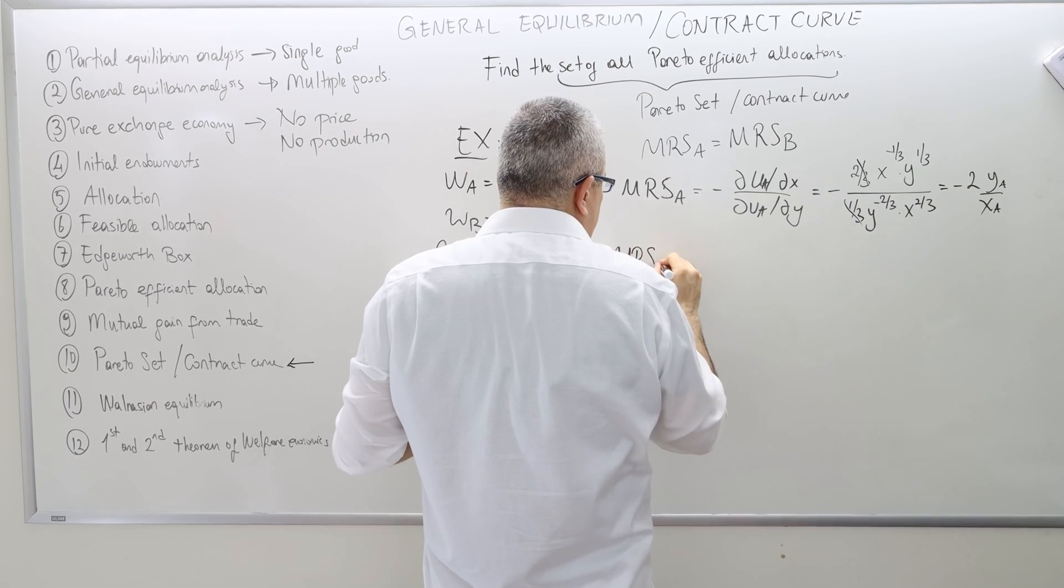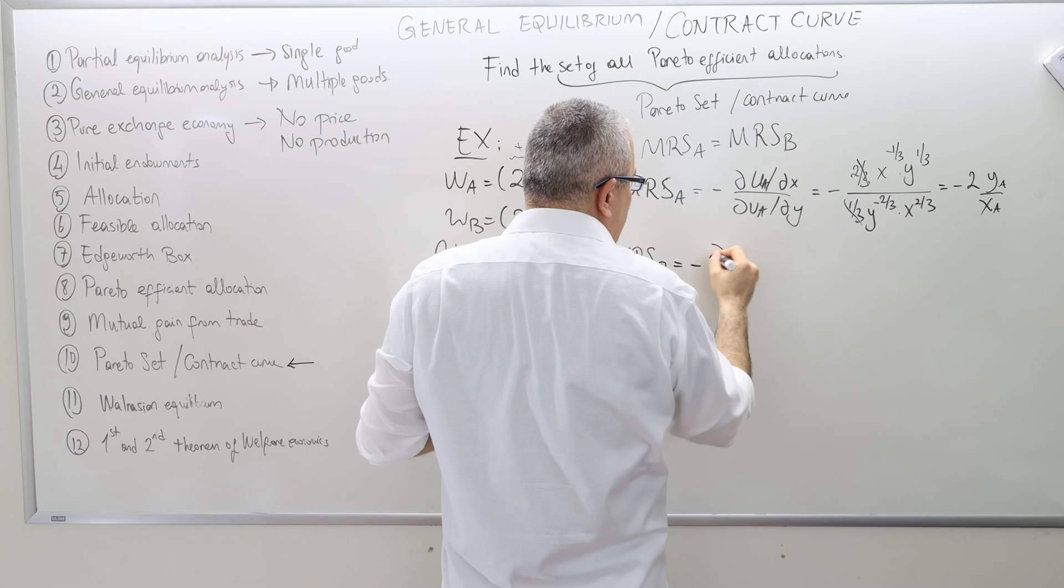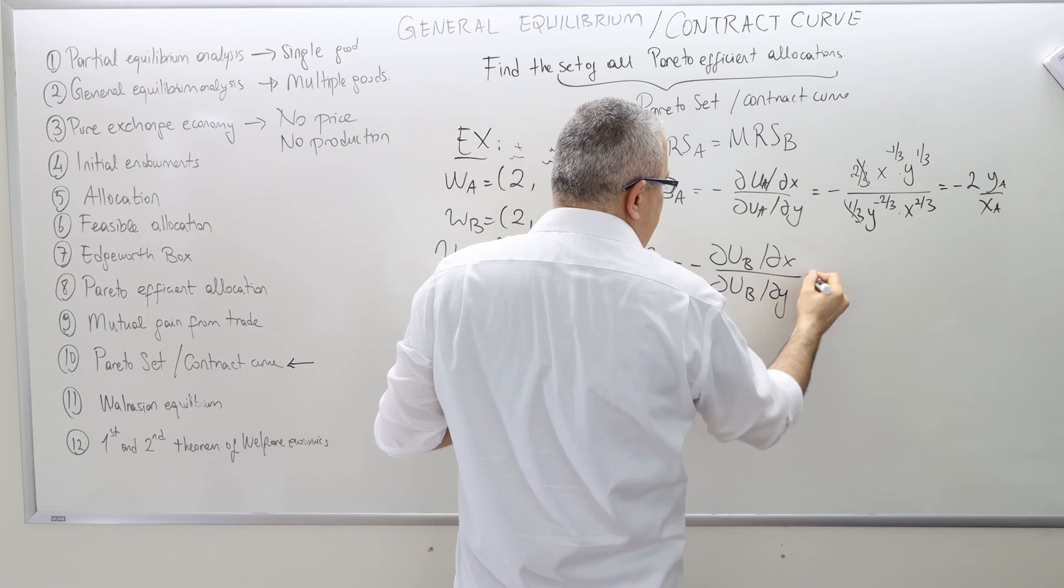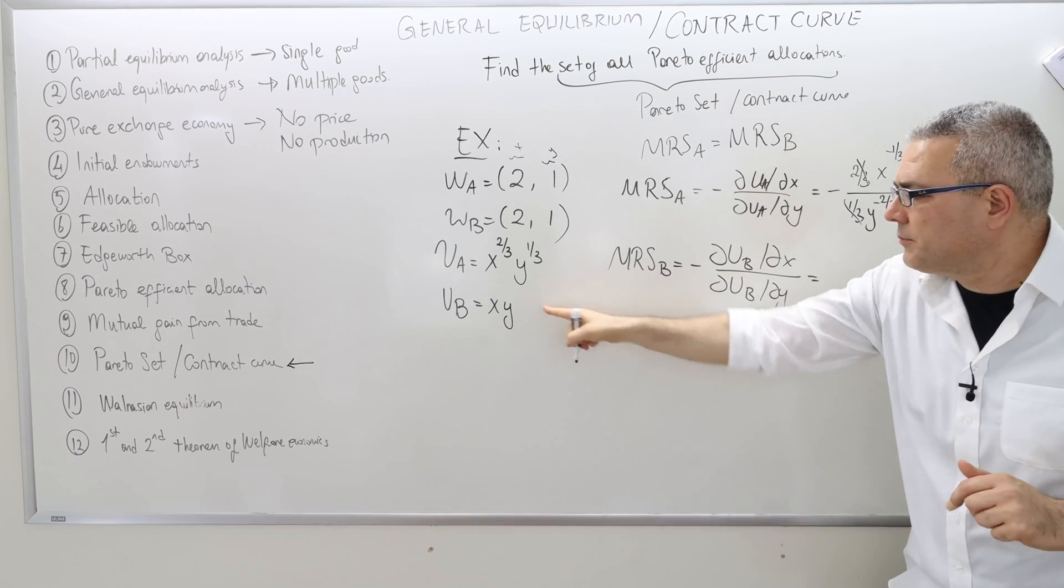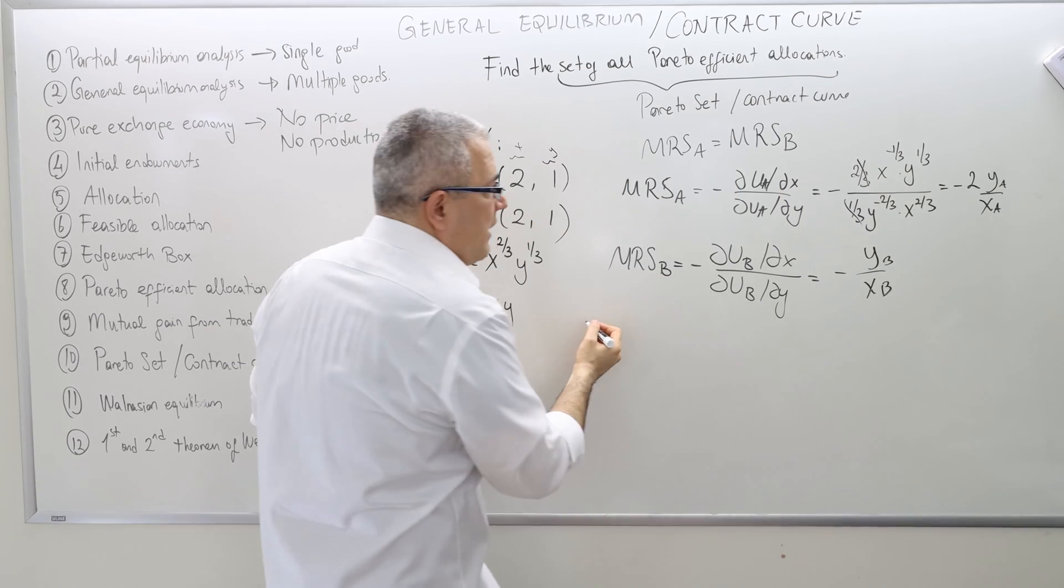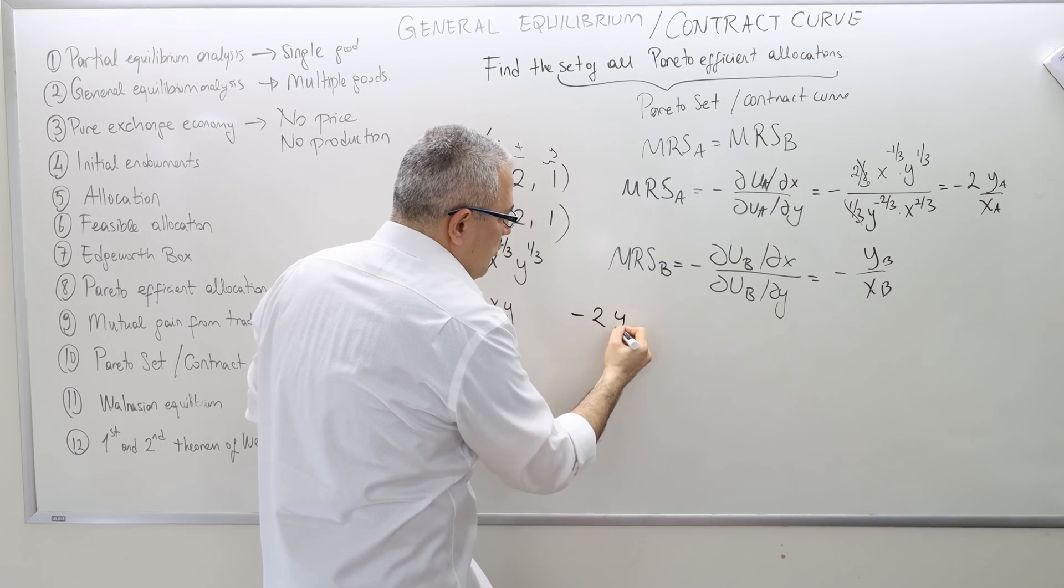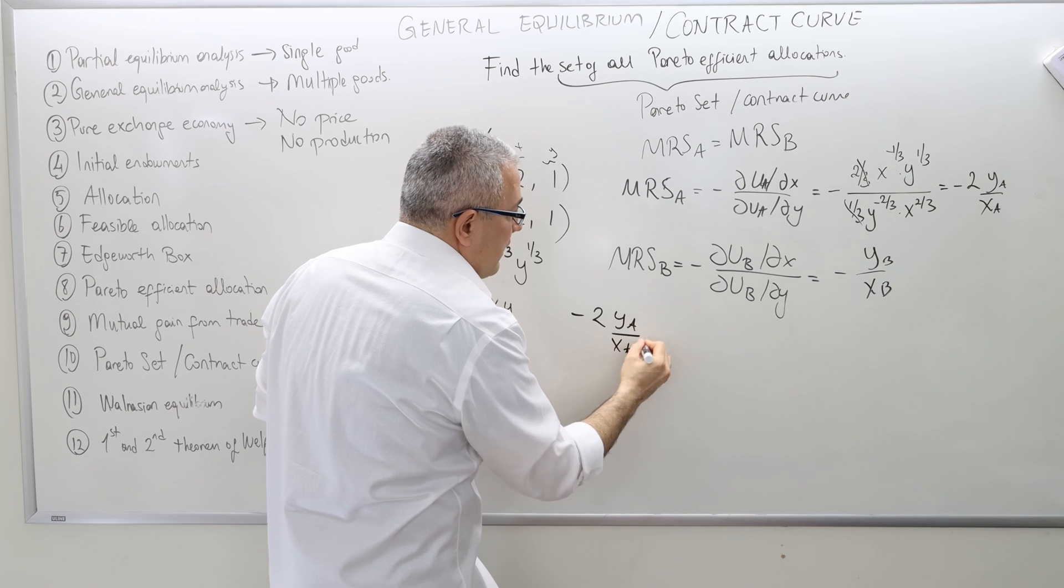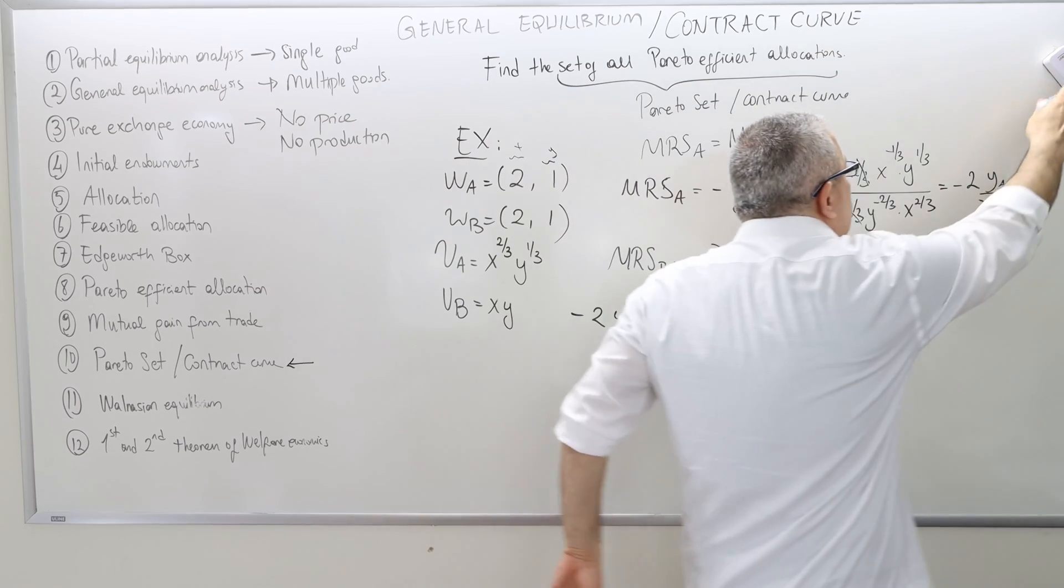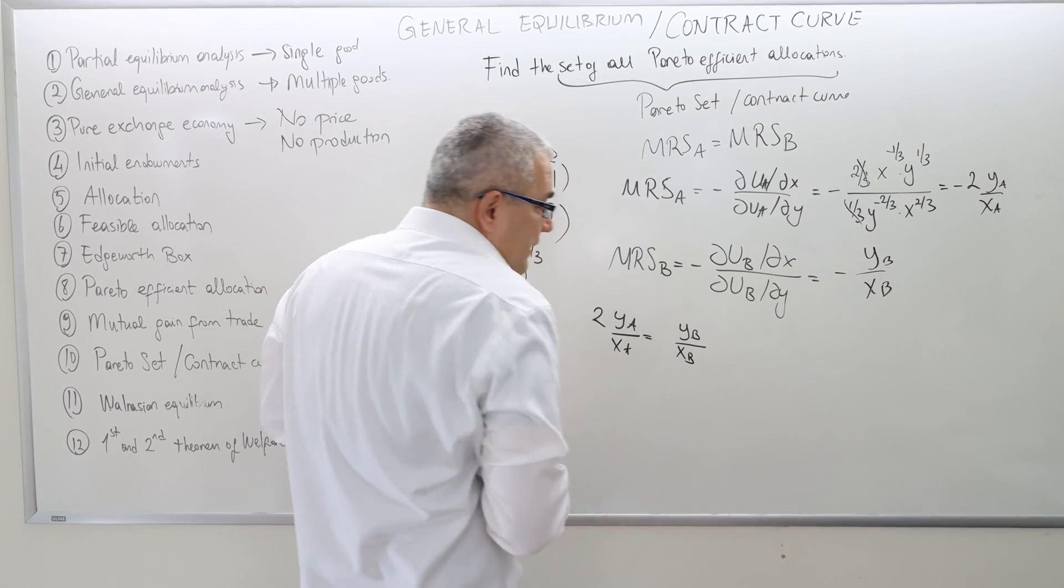Marginal rate of substitution for agent B, however, is del u_B del x divided del u_B del y. We already know that this is nothing but minus y_B over x_B. So the marginal rate of substitutions are equal to each other means minus 2 y_A divided by x_A must be equal to minus y_B divided by x_B. The minus terms will cancel out. So just ignore that. That's the contract curve.